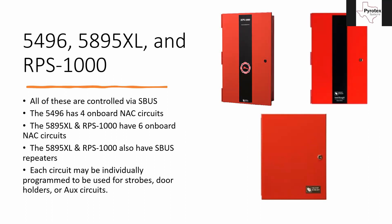These are three different Silent Night and Fahrenheit models that more or less work the same, so I grouped them together. They're all controlled via SBUS — the four-wire data circuit — and it can be T-tapped. The 5496 has four onboard NAC circuits and no onboard auxiliary power; if you need aux power, one of the NAC circuits has to be converted. Each circuit can be configured to be anything you want — a strobe circuit, door holder, auxiliary power, whether that aux power needs to be resettable or non-resettable, et cetera.